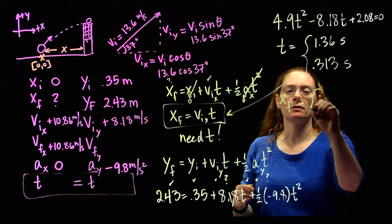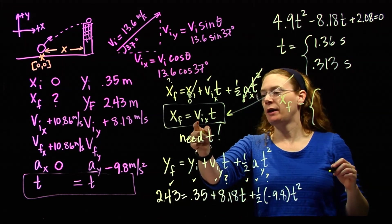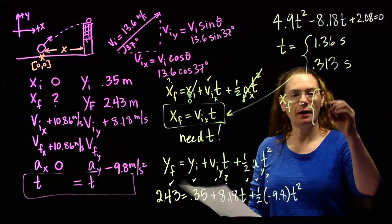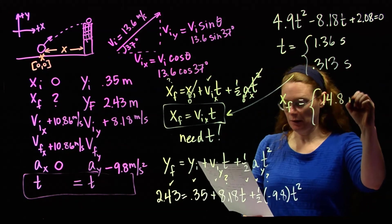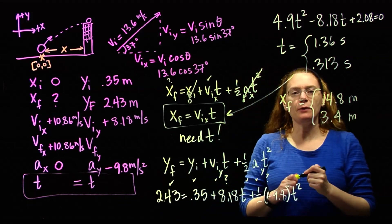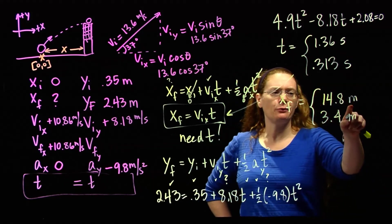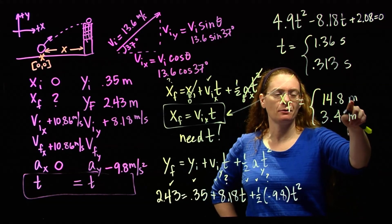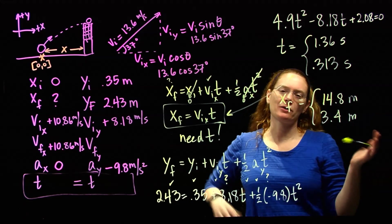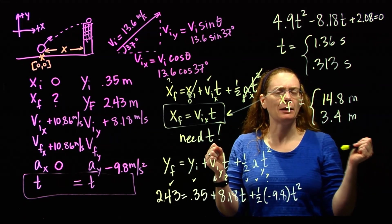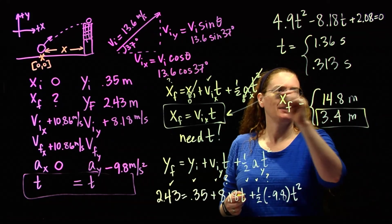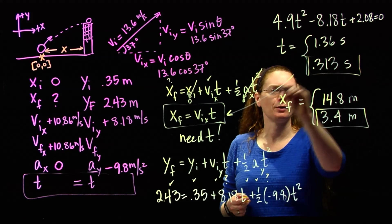Let's see if the positions give us something useful. So I'm going to go back and put those into the position equation and solve for x final. So I'm going to have two x finals: 10.86 times each time value. My answers are 14.8 meters and 3.4 meters. Even if you don't know too much about volleyball, you can probably guess that 15 meters, over 15 yards, 45 feet, that seems a little bit long. So this, I think, is the reasonable answer, which means this was the reasonable time.